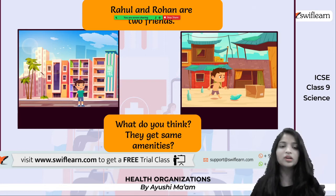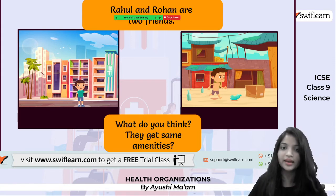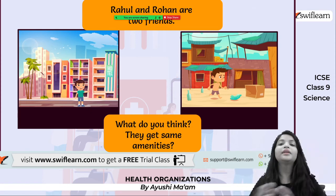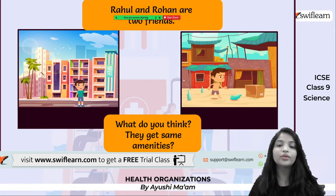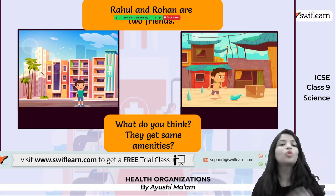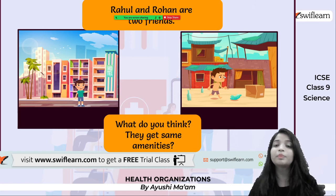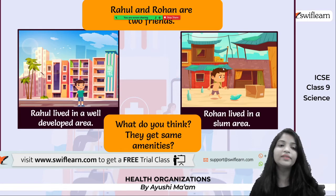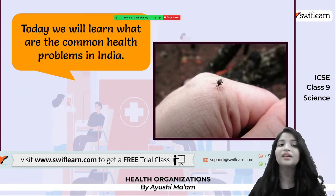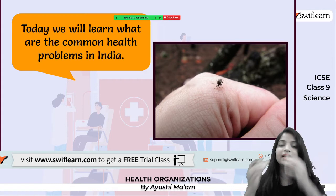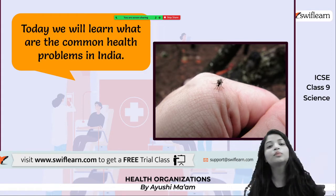I hope everyone can relate, because this is a story that is happening in everybody's life. We are just taking two names — Rahul and Rohan are two friends. As you can see in the picture, they are belonging to two different communities. One is having a well-furnished room, and on the other hand, one is not having the basic amenities. Basically, Rahul is actually living in a well-developed area, but Rohan is living in a slum area, and we all have seen slum areas and what type of facilities they have.